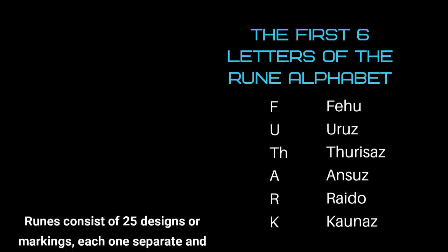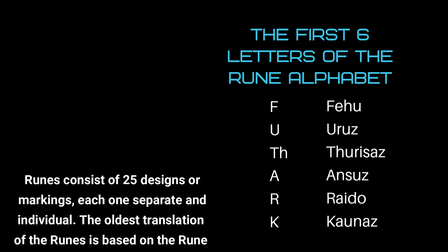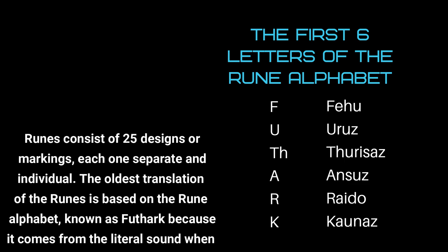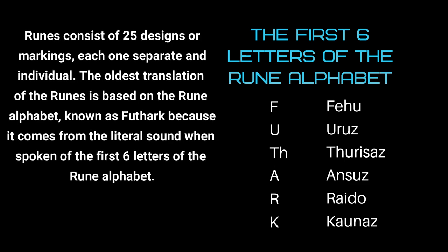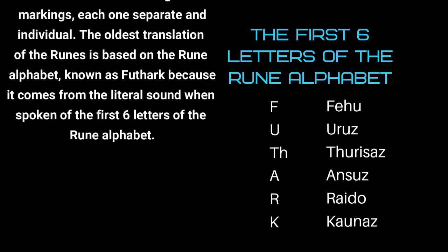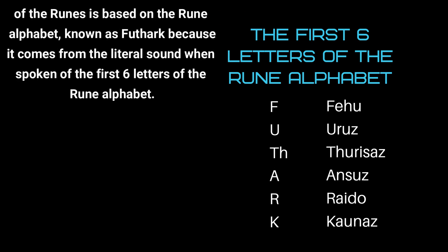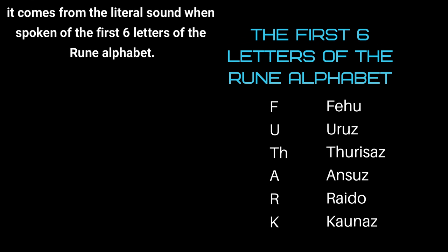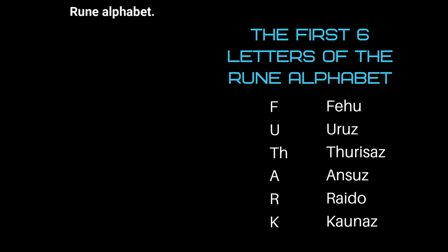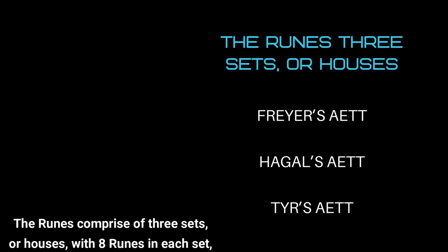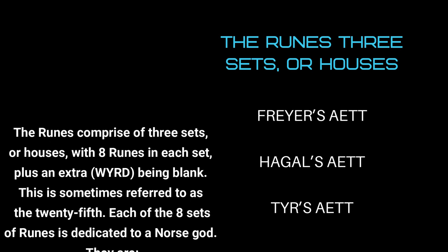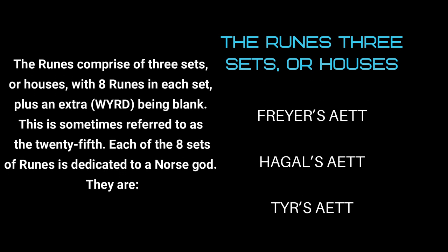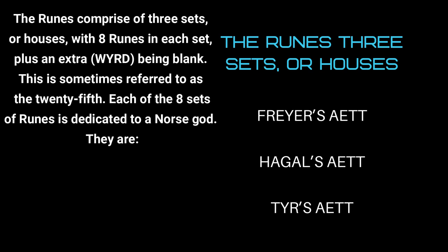Runes consist of 25 designs or markings, each one separate and individual. The oldest translation of the runes is based on the rune alphabet, known as the Futhark, because it comes from the literal sound when spoken of all the first six letters of the rune alphabet. The runes comprise three sets or houses, with eight runes in each set, plus an extra being blank — this is sometimes referred to as the 25th.